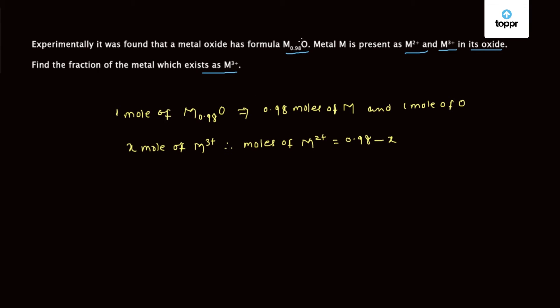As net charge is zero, the total charge will be 3 times x moles plus 2 times (0.98 minus x) plus the charge due to oxygen which is minus 2, and 1 mole of oxygen is present. This equals 0.